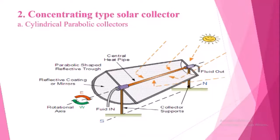When a reflector is manufactured in the form of a trough with parabolic cross section, the solar radiations get focused along a line.